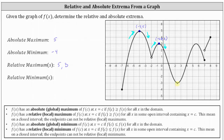Next, we have a low point where the ordered pair is approximately 2.3 comma negative 3. There is an open interval containing x equals 2.3, and this point is a low point. Therefore, the y value or function value of negative 3 is a relative minimum, which occurs at x equals 2.3. We list negative 3 as a relative minimum. Notice the function changes from decreasing to increasing at this point, which confirms it represents a relative minimum.